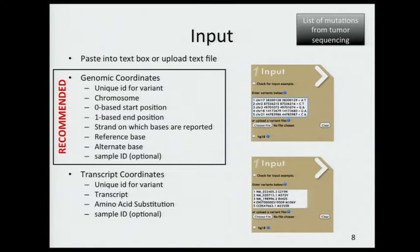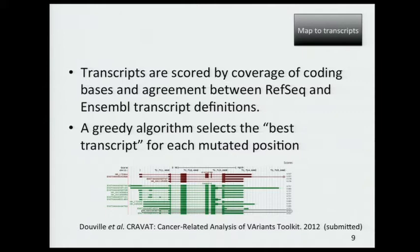In the next step, we map mutations onto what I'm calling the best available transcript for a position. Briefly, we have a greedy algorithm that selects this best transcript for a particular position, based on the coverage of coding bases of the transcript and also the extent to which it represents a consensus of RefSeq and Ensembl transcripts.